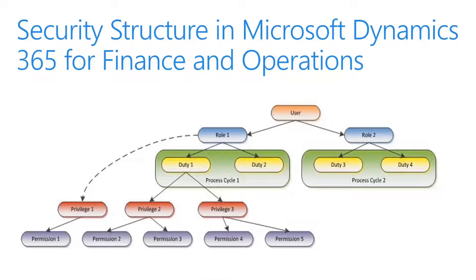The security model is hierarchical and each element in the hierarchy represents a different level of detail. Permissions represent access to individual securable objects such as menu items and tables. Privileges are composed of permissions and represent access to tasks such as canceling payments and processing deposits. Duties are composed of privileges and represent parts of the business process, such as maintaining bank transactions. Both duties and privileges can be assigned to roles to grant access to Microsoft Dynamics 365 for Finance and Operations.